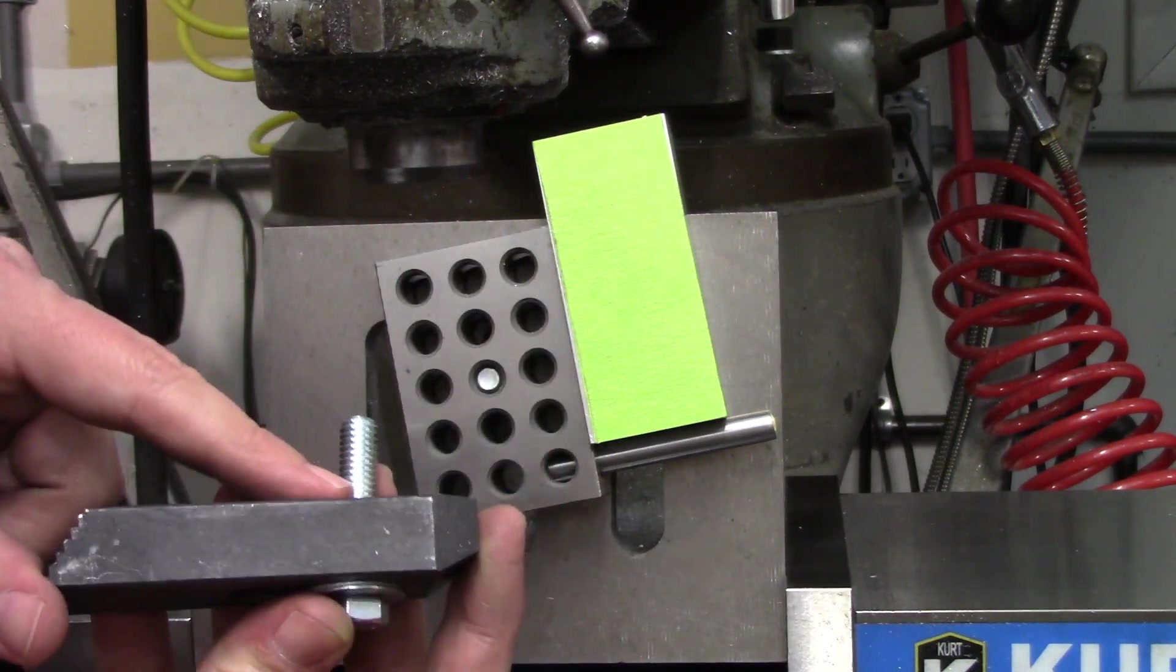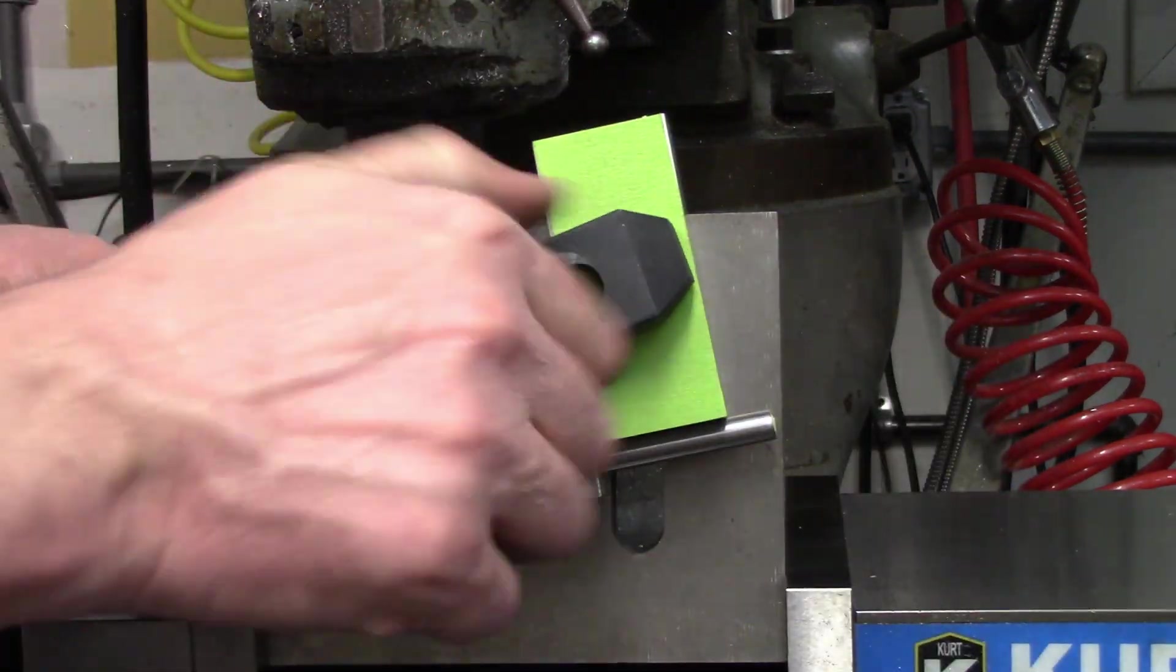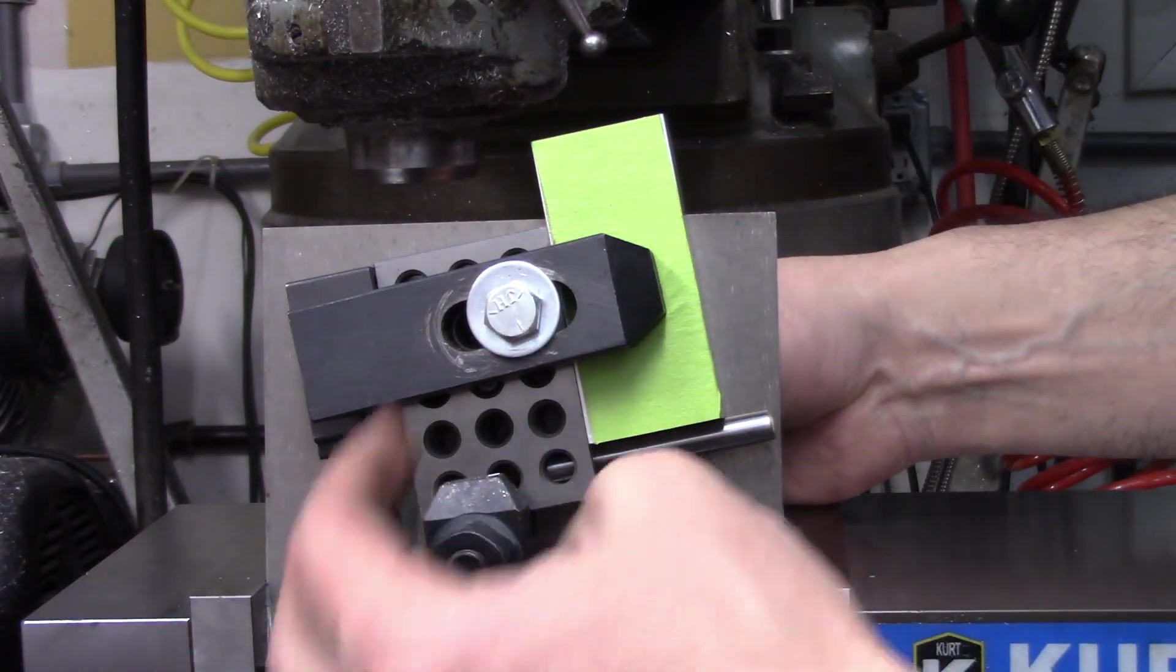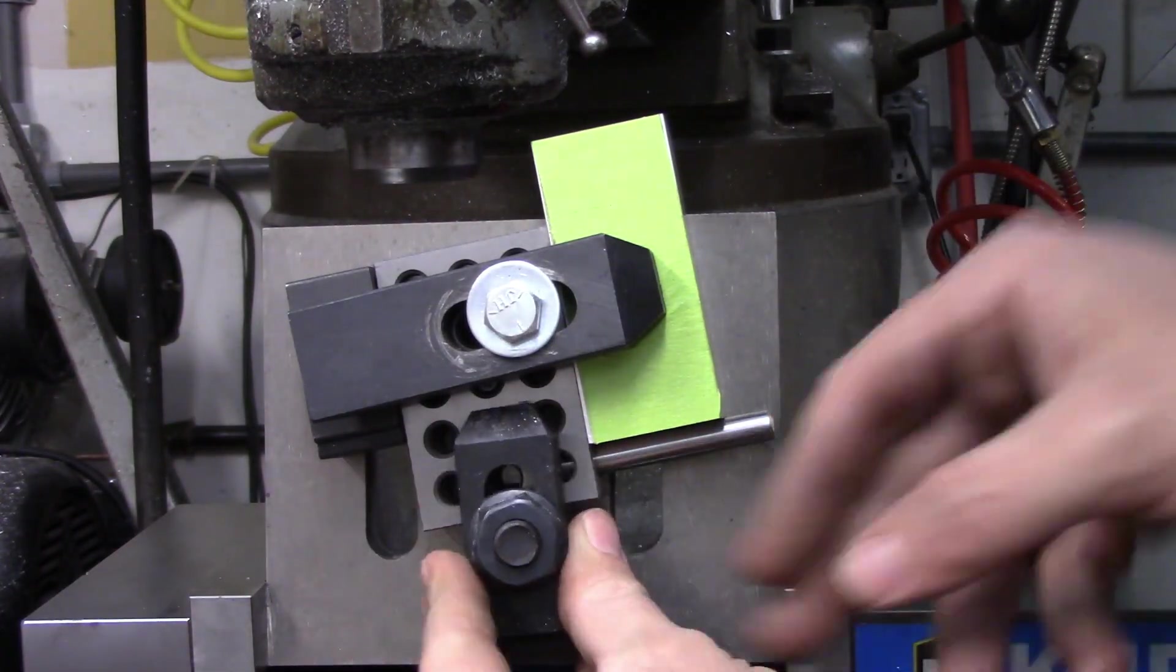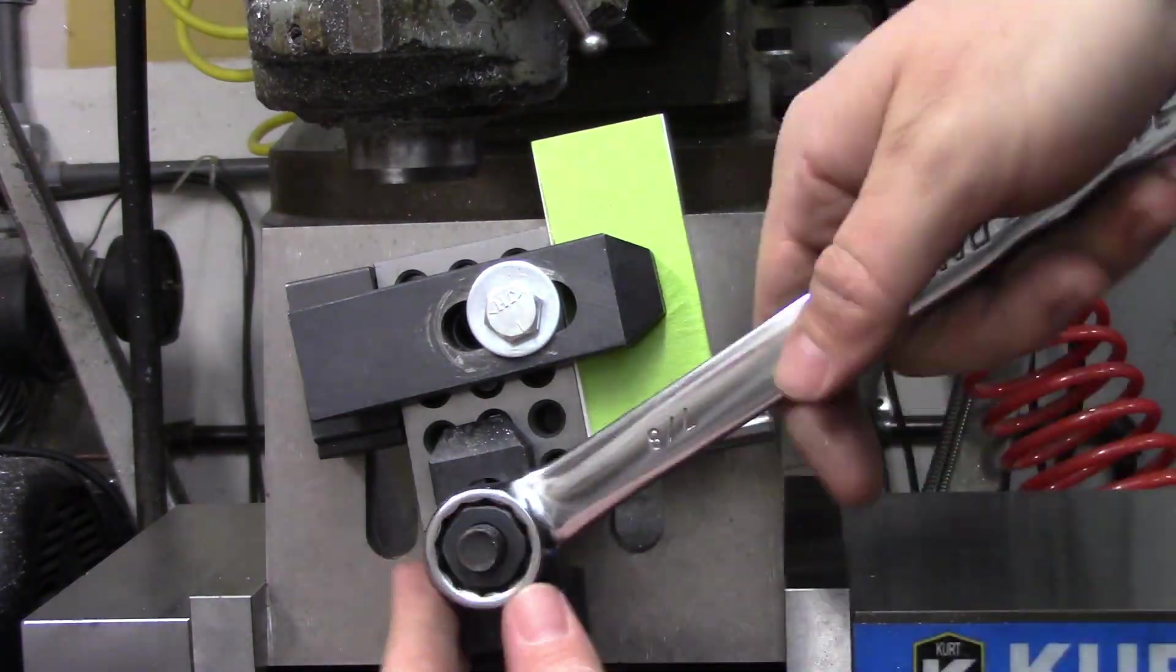I'll be bolting that clamp down to the one-two-three block as well, and I have a couple of step blocks that I've set to the same height as my part. The one-two-three block is actually only being held by the one bolt from the back right now, so I'm adding another step clamp to it to make sure it doesn't move on me.